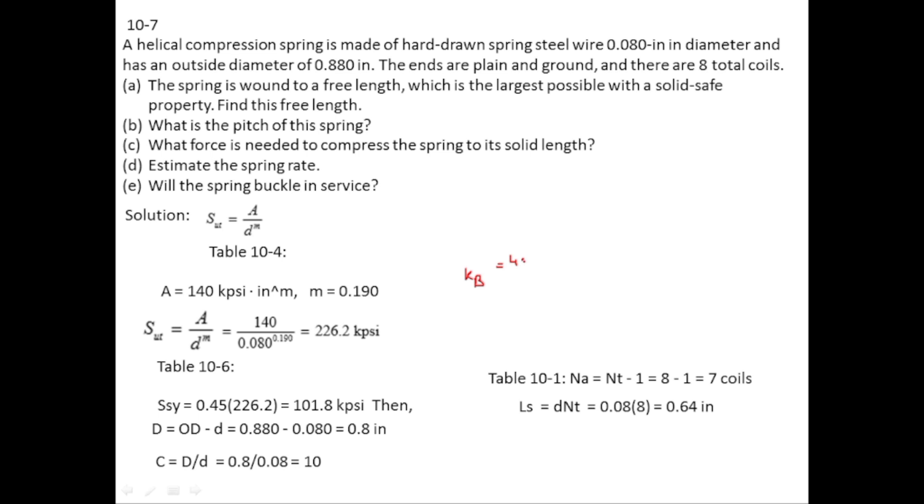KB equals 4C plus 2 divided by 4C minus 3. With C equal to 10, KB equals 42 divided by 37, giving 1.135. Tau S equals KB times 8FD divided by pi d cubed. Now replace tau with tau S and F with FS.